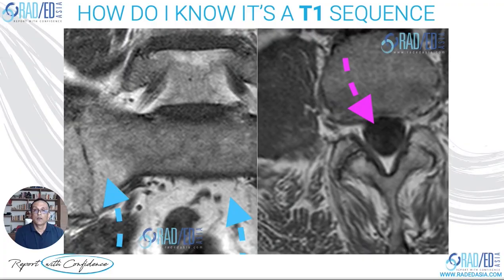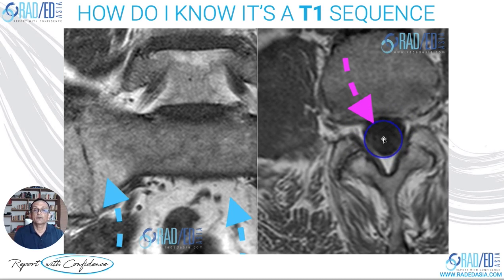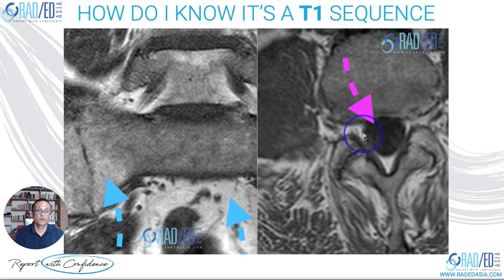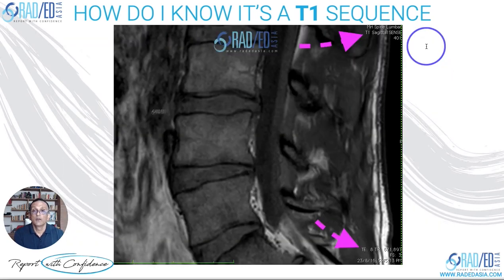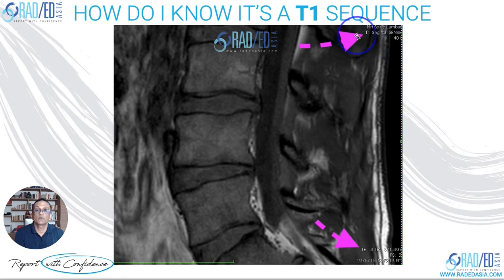Starting with a T1-weighted scan — we're not going to look at the physics. What you need to know is: how do I know when I look at a scan whether it's T1 or T2? The easiest way to know whether it's a T1-weighted scan is to look at the CSF. Here's the thecal sac — the thecal sac contents are black. Fluid on a T1-weighted sequence is dark, low signal. You'll also see that fat is very bright on T1, but this alone isn't enough because T2-weighted scans can also have bright fat. The simplest way is to look at the CSF and see whether it's dark. You can also look at the corners of the images — most commonly they will tell you what sort of scan it is, for example 'T1 sagittal.'